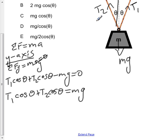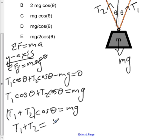We know they're both the same length and both labeled theta, so they're both the same angle. We can factor this out and have (T1 + T2) cos θ equals mg. Therefore, T1 + T2 equals mg over cos θ.